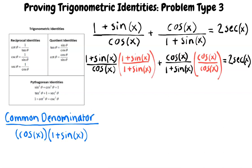In this case, the common denominator would be cosine of x times 1 plus sine of x. In order to combine these fractions, we need to multiply the first fraction by 1 plus sine of x over 1 plus sine of x, and the second fraction by cosine of x over cosine of x. This will cause the two fractions on the left side of our problem to have the same denominator so that we can add them.